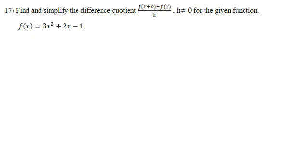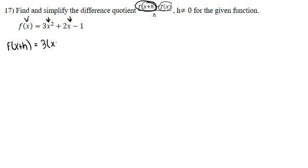Our first step is finding f of x plus h. With function notation, whatever is inside the parentheses is what we plug in for x. Since we already know f of x, we only need to solve for f of x plus h. We plug x plus h into every x value in our original function, giving us 3 times (x plus h) squared, plus 2 times (x plus h), minus 1.